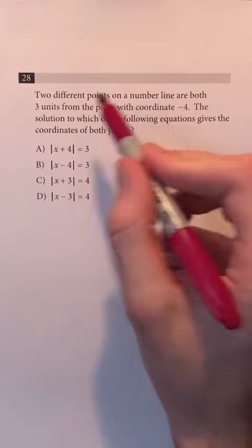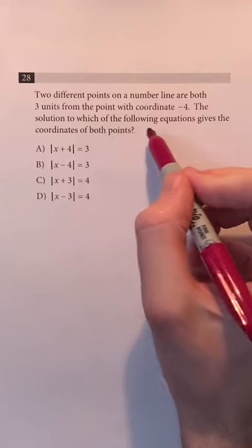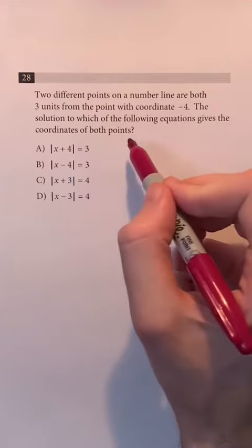Two different points on a number line are both three units from the point with coordinate negative four. The solution to which of the following equations gives the coordinates of both points?